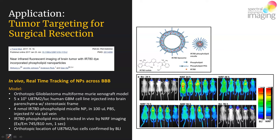Using the bioluminescent signal, they monitored intensity to the point where they believed there was an adequate glioblastoma cell mass. The investigators then used a 4 nanomolar quantity of the fluorophore-loaded micelle structure and introduced it into the mice via tail vein injection.